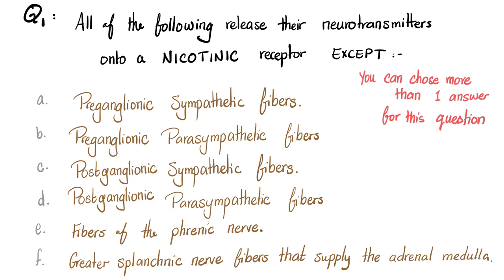All of the following release their neurotransmitters onto a nicotinic receptor. Except? So let's talk about that. Preganglionic sympathetic fibers. Well, any preganglionic fibers use nicotinic receptors, especially N sub N. How about postganglionic sympathetic? These ones release norepinephrine onto alpha or beta adrenergic receptors.